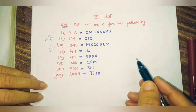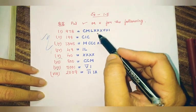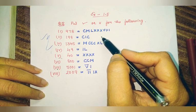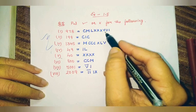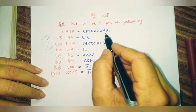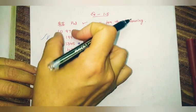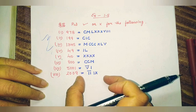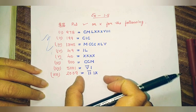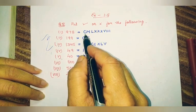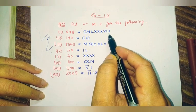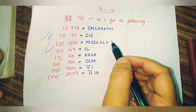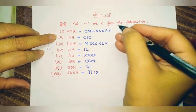On the behalf of Roman number rules, we are going to discuss question number 5 of exercise 1.5. In this question, we have to find out whether the written symbol is correct or not. A number is written in Hindu-Arabic and on the opposite side the same number is written in Roman numeral. We have to find out whether the Roman numeral written in front of the Hindu-Arabic number is correct or not.